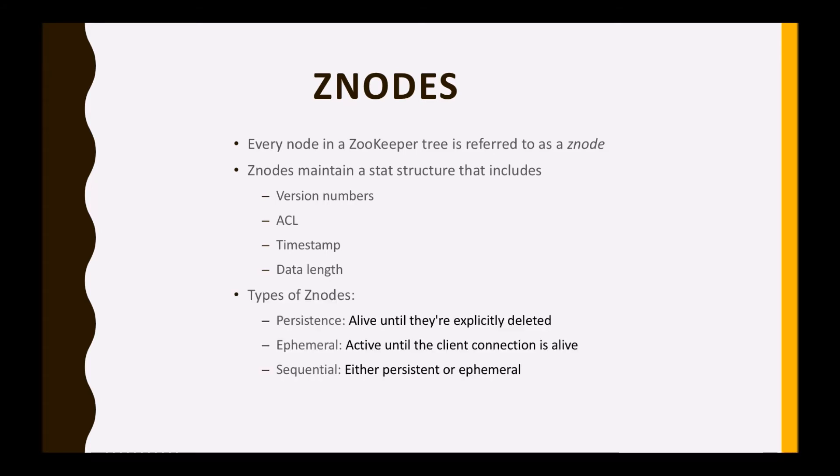So the types of Z nodes — we have three types of Z nodes available in ZooKeeper: persistence node, ephemeral node, and sequential node.